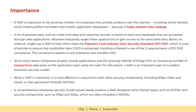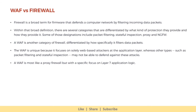A comprehensive enterprise security model would ideally position a WAF alongside other firewall types such as NGFWs, and security components such as IPS and IDS, which are often included in next-generation firewalls. Comparing WAF and traditional firewalls: a firewall is a broad term for software or firmware that defends a computer network by filtering incoming data packets, with several categories differentiated by the kind of protection they provide — including packet filtering, stateful inspection, proxy, and next-generation firewall. A WAF is another category, unique because it focuses solely on web-based attacks at the application layer, whereas packet filtering and stateful inspection may not defend against these attacks. A WAF is most like a proxy firewall but with a specific focus on Layer 7 application logic.